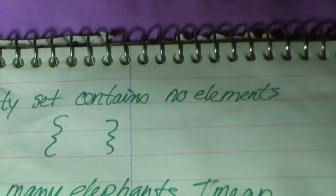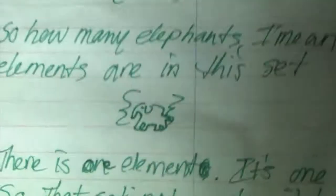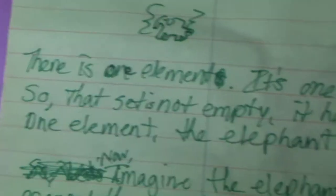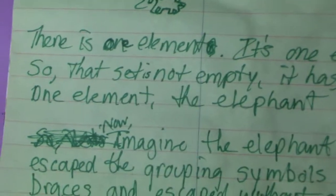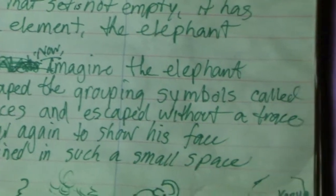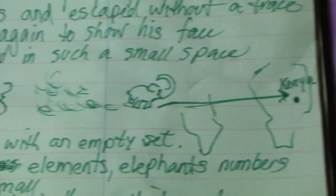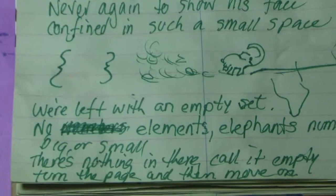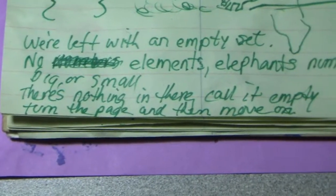An empty set contains no elements. So how many elements — I mean elements — are in this set? One element. Well, there is one element. It's one elephant. So that set is not empty. It has one element, the elephant. Imagine the elephant escaped the grouping symbols called braces and escaped without a trace, never again to show his face, confined in such a small space. See him running off to his homeland there? We're left with an empty symbol. No elements, elephants, numbers big or small. There's nothing in there. Call it empty. Turn the page and then move on.